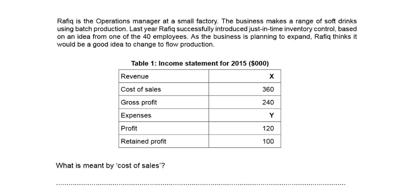This video is for IGCSE Cambridge Business Studies, looking at Paper 1 and concentrating on the financial topic. Because of the direction of numeracy initiatives across the world, it is becoming more and more popular within business studies exams, especially the financial topics. This section is based on the income statement which measures the profit and loss for a business. We're going to concentrate on Table 1.